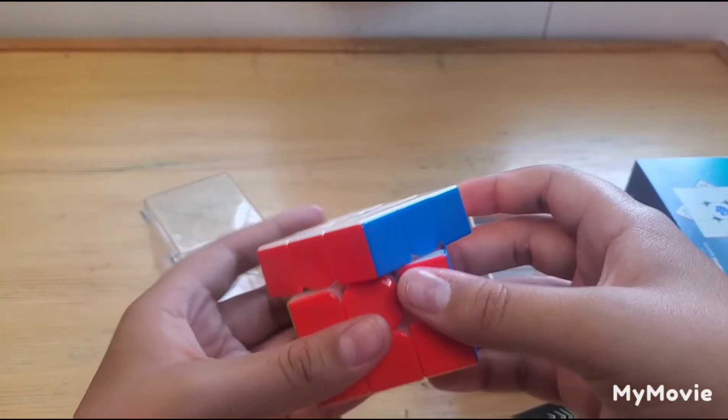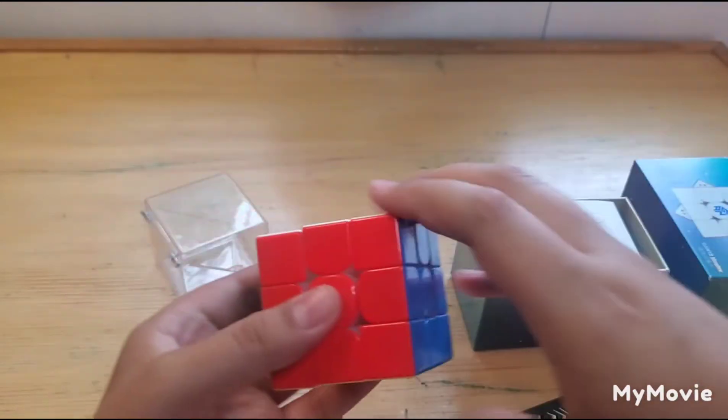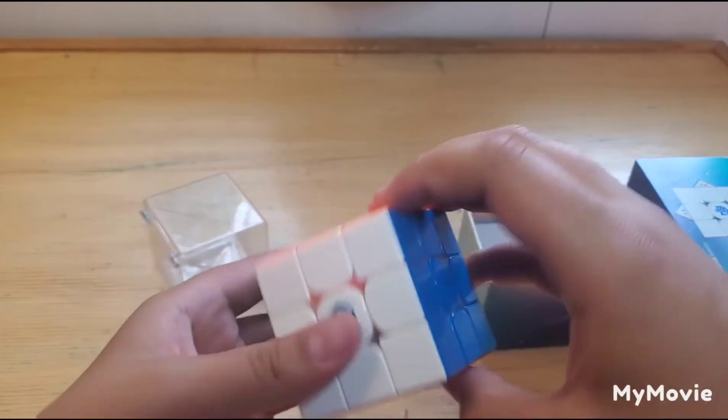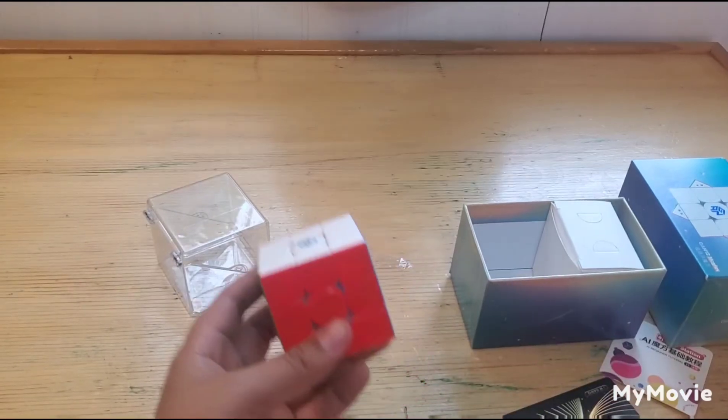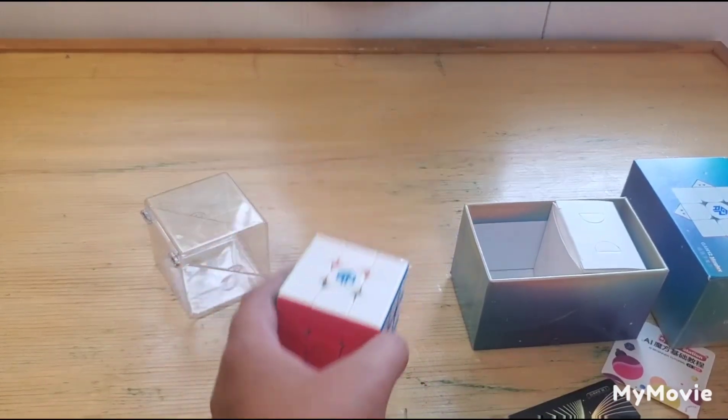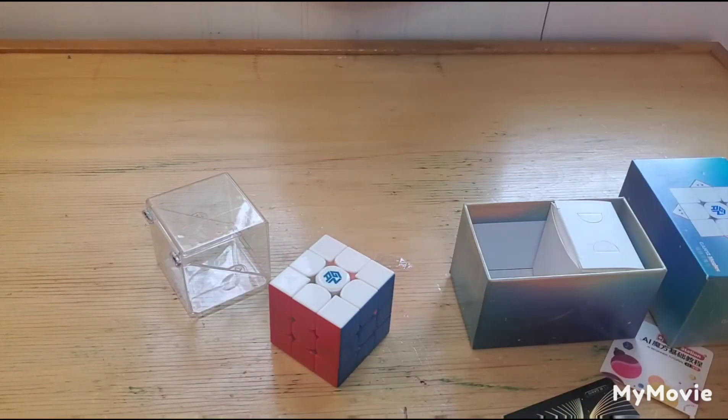And reverse corner cutting is just the top of the line of speed cubing. This cube is still worth the price, so go to your local website and search up GAN 12 Maglev. If you find one, purchase it. See you later everyone, bye!